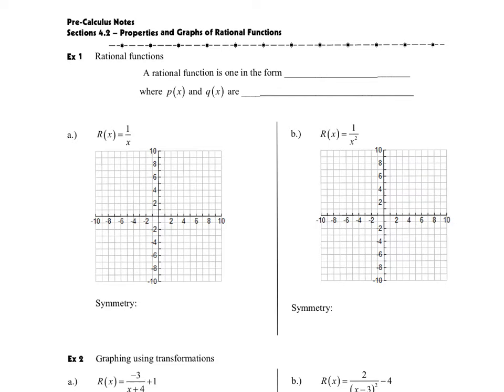So let's start with our definition of a rational function here at the top of the page. A rational function is one that's in the form, and we're typically going to say r of x for a rational function. And what's necessary is that we're going to have this p of x over a q of x. And what's important is that p of x and q of x are both polynomial functions.